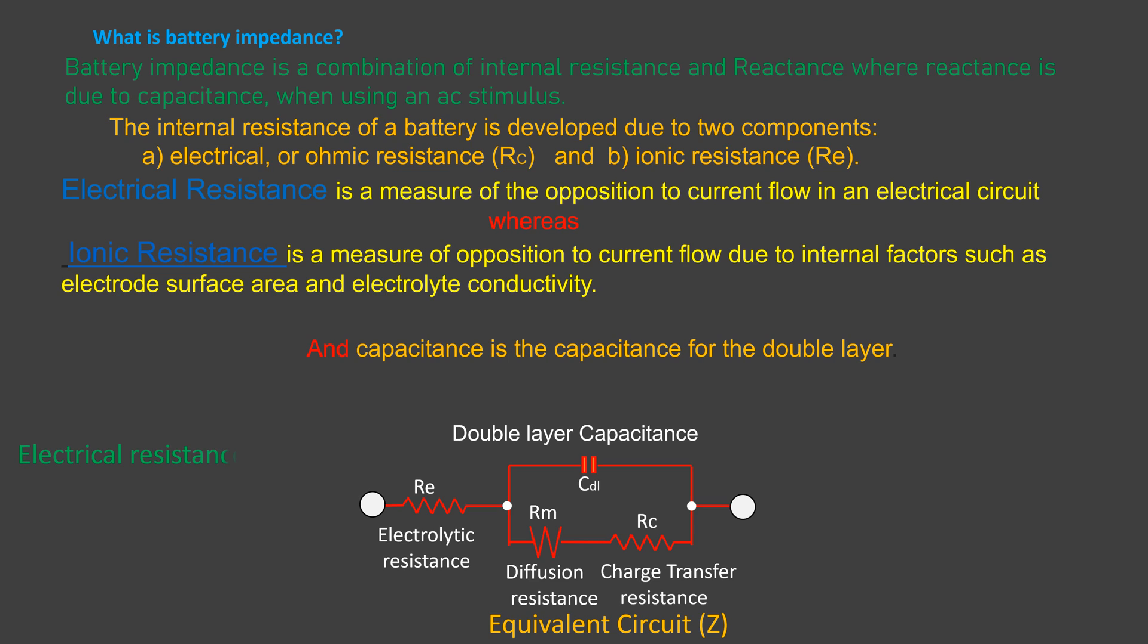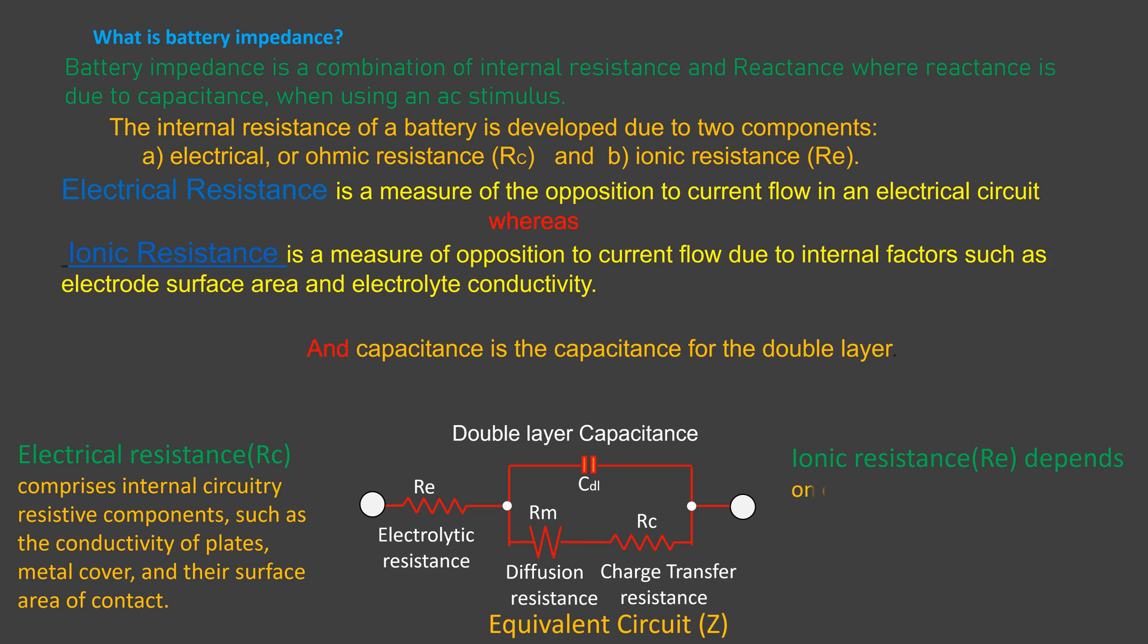Electrical resistance RC comprises internal circuitry resistive components such as conductivity of plates, metal cover, and their surface area of contact. Ionic resistance RE depends on chemical factors such as electrolyte concentration, ion mobility, type of ions, electrode geometrical surface area, and polarization.